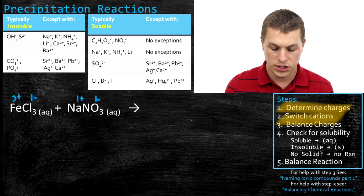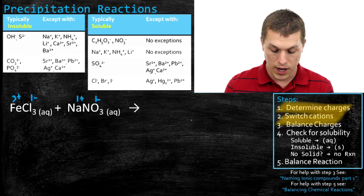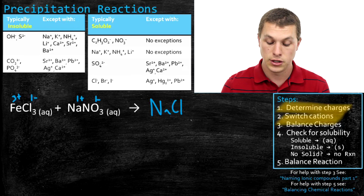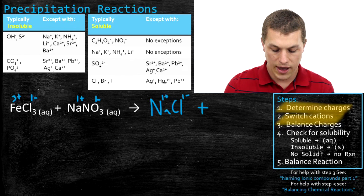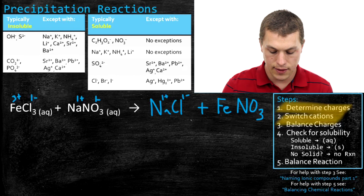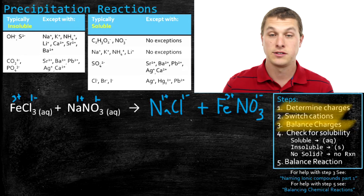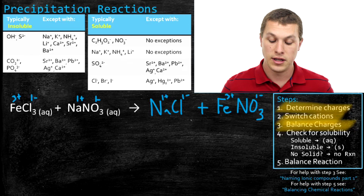Now let's switch the cations — put iron where we see sodium and sodium where we see iron. The first possible product is sodium chloride. Sodium is still plus one and chlorine is still minus one — you can see right away that's balanced. Now we write iron where we saw sodium, giving us iron nitrate. Iron carries over at three plus and nitrate is one minus. Step three, balance the charges: sodium chloride is balanced, but iron nitrate is not.